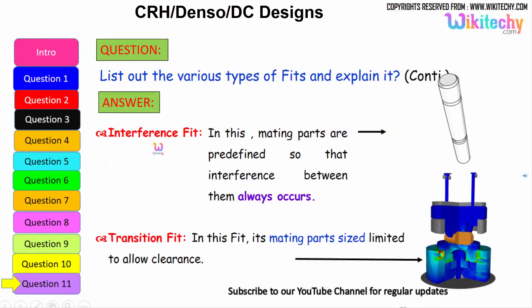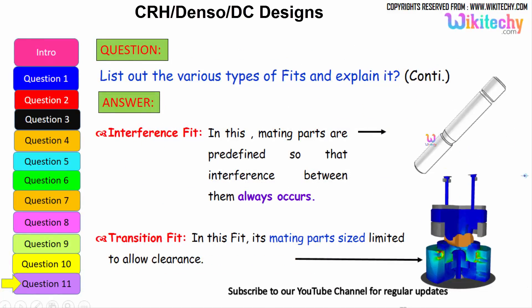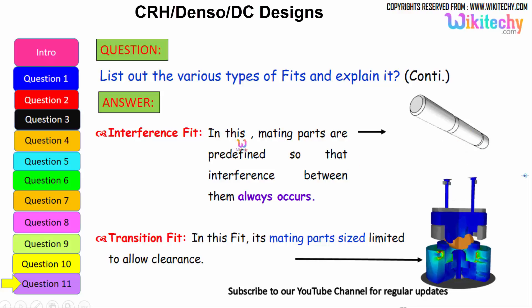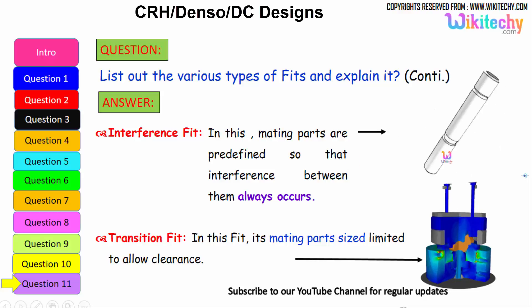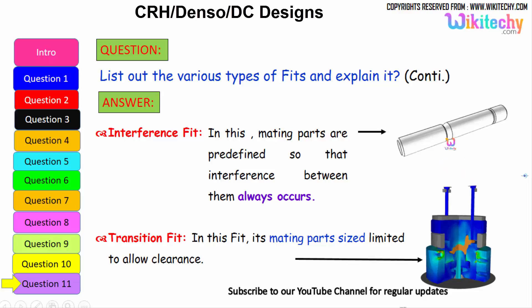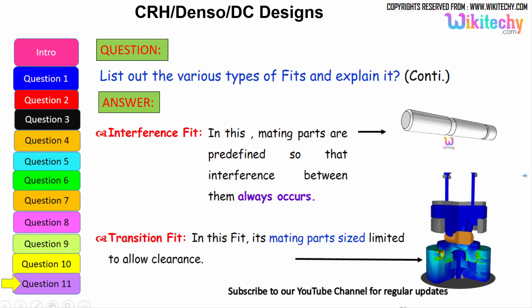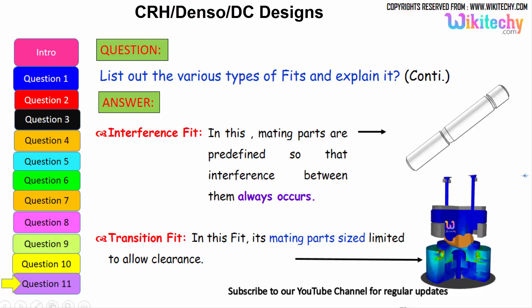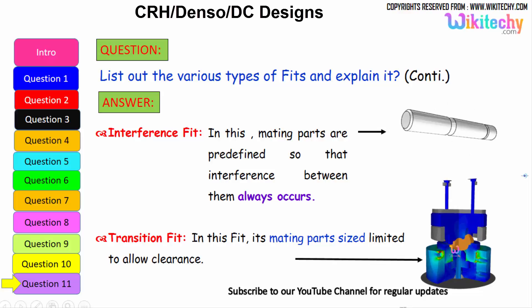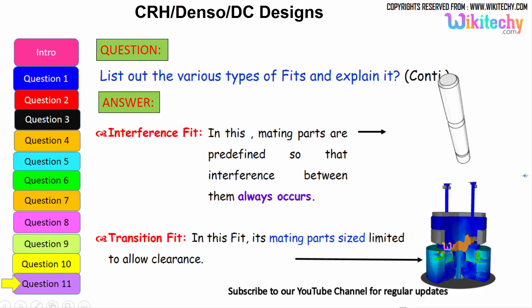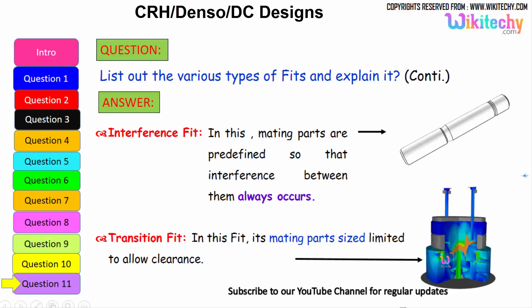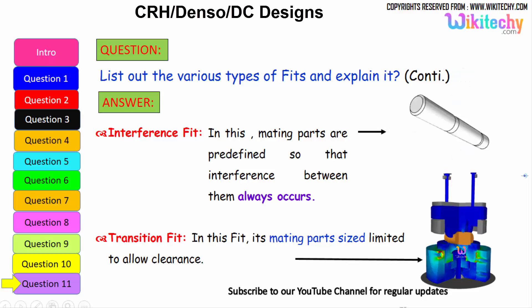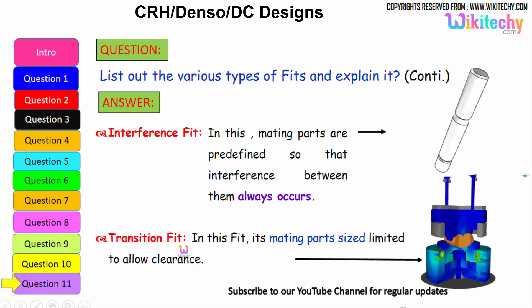In interference fit, the mating parts are predefined so that interference between them always occurs. In transition fit, the mating parts' size is limited to allow low clearance — there should not be an exact tight fitting. That is your transition fit.